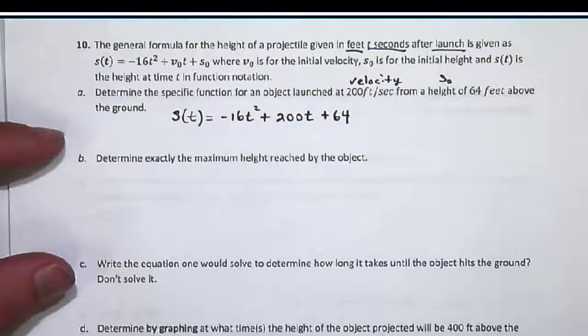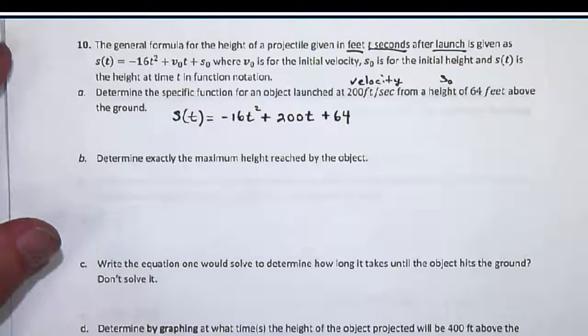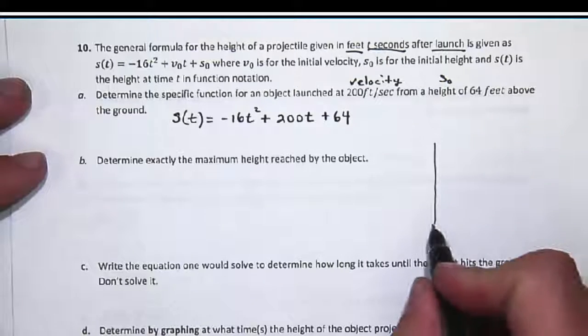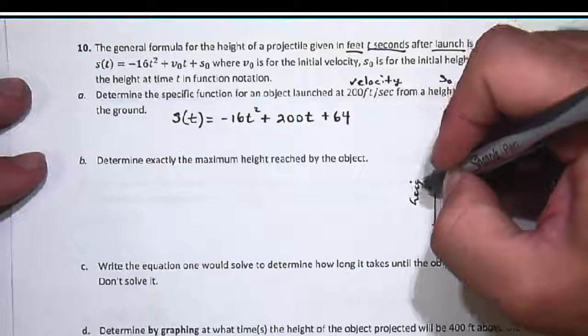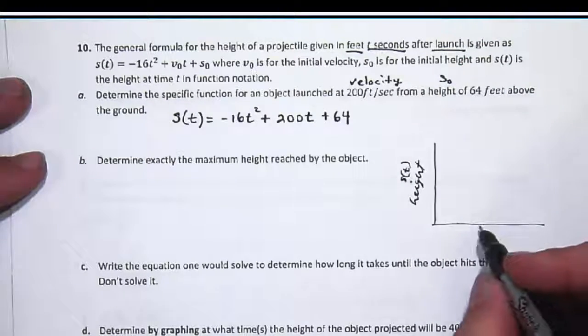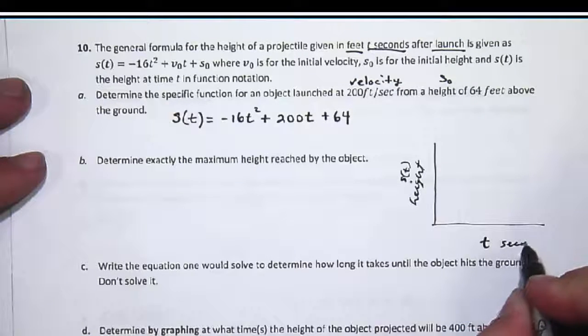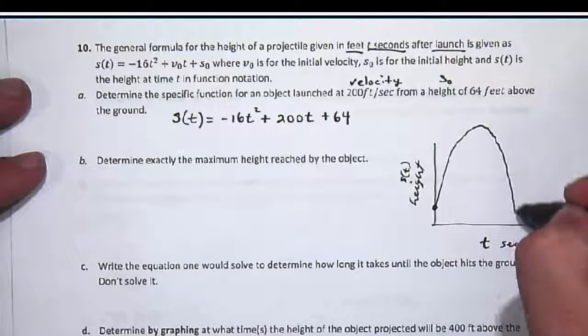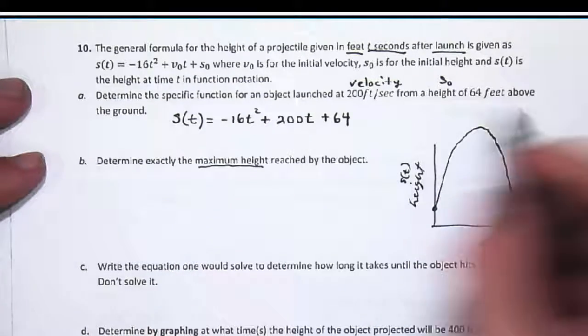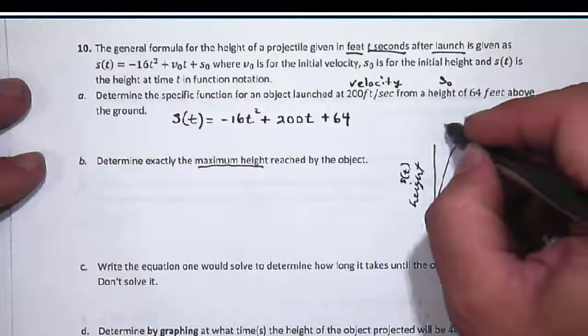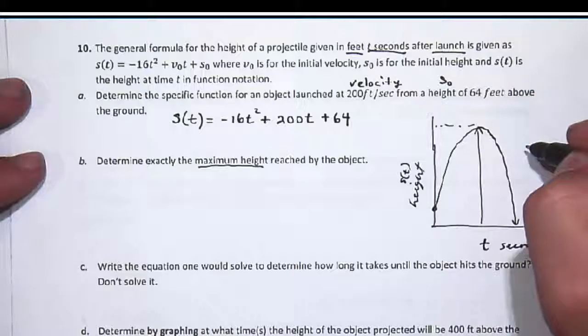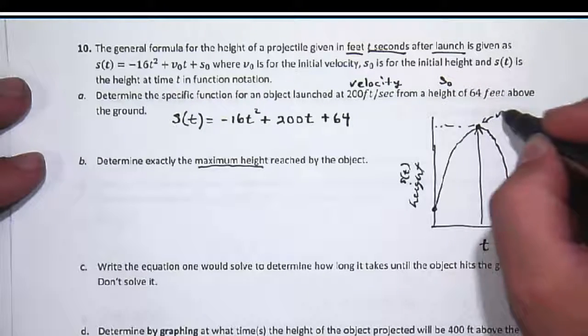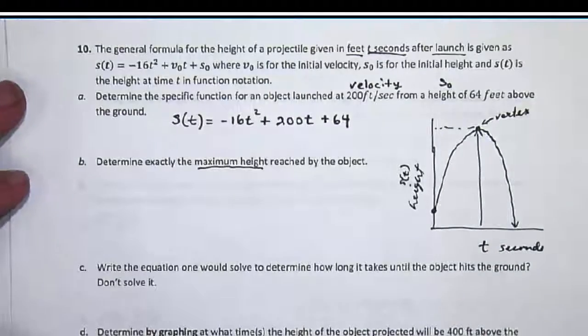In part b, we want to determine exactly the maximum height reached by the object. This is a parabola. If you graph this thing, you would have height s(t) on the y-axis, t on the x-axis for seconds. You would see this starts at a height of 64, goes up for a certain amount of time, then comes back down. When I ask for the maximum height, I'm asking for this distance here. This height occurs at this time, and this time and height together are the vertex. So I'm trying to find the vertex.